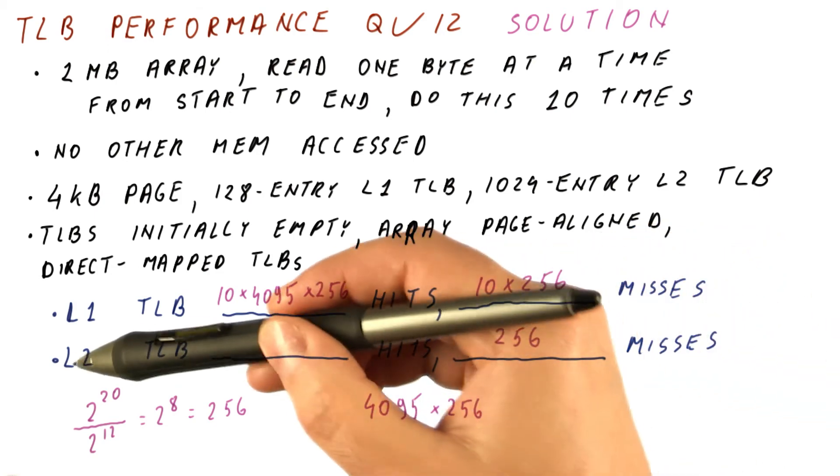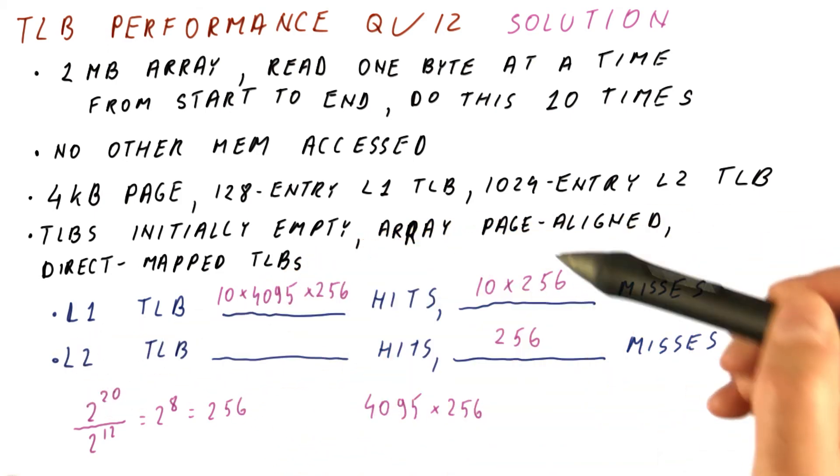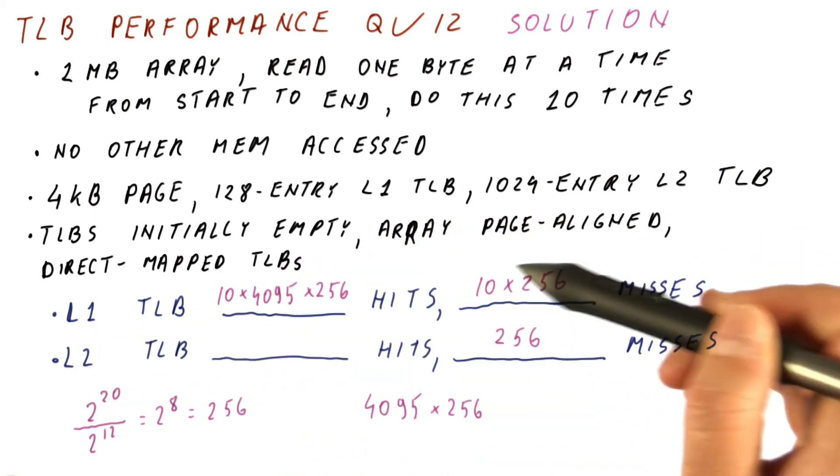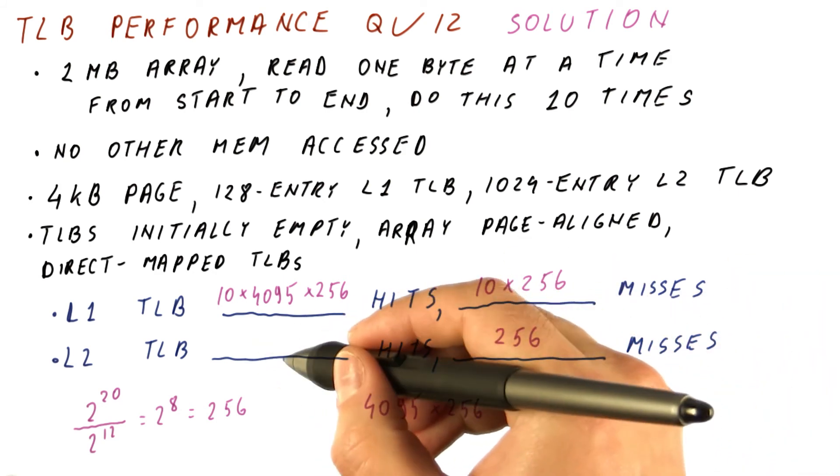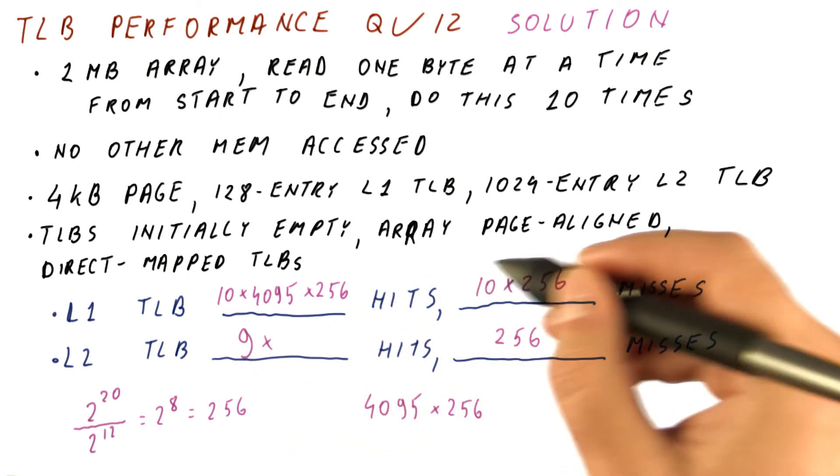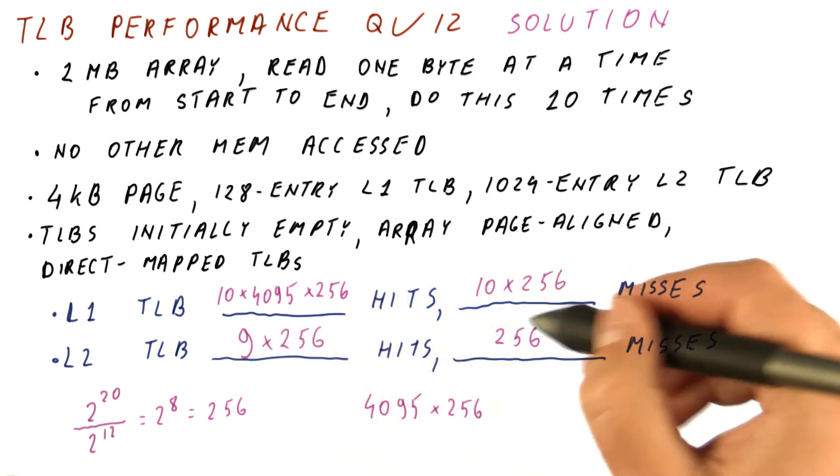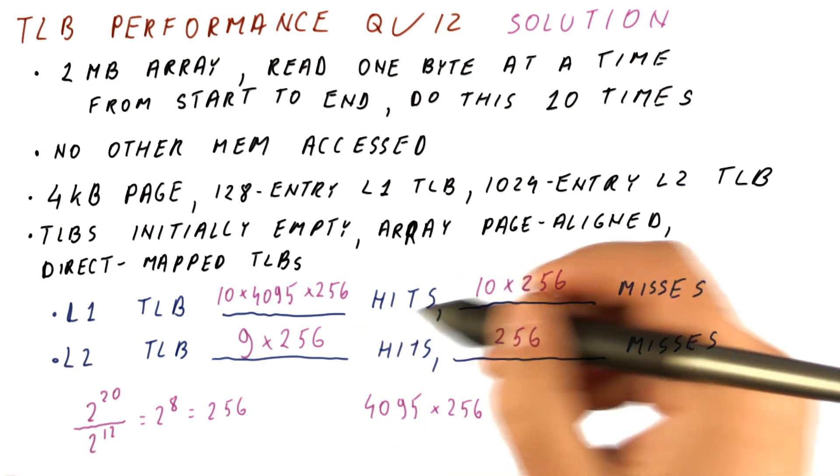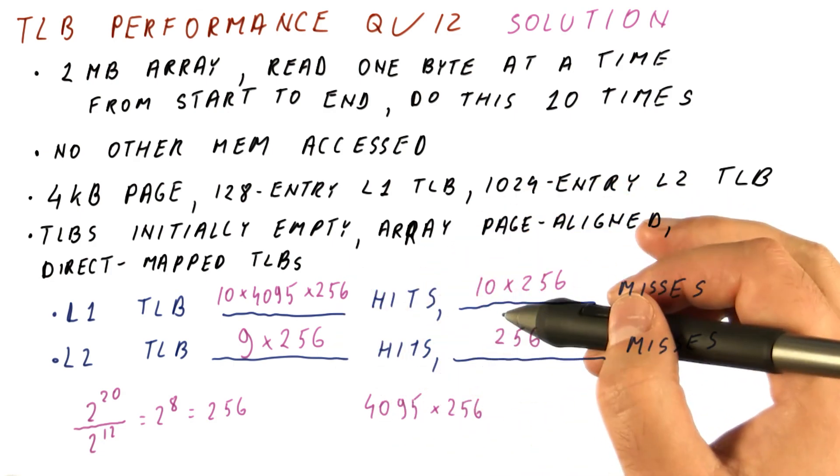Note that we only access the level two TLB if we have a miss in the level one TLB. So the number of hits here will be this minus this. So for nine sweeps, we will be having these misses go here and be hits. So this is the answer to this quiz.